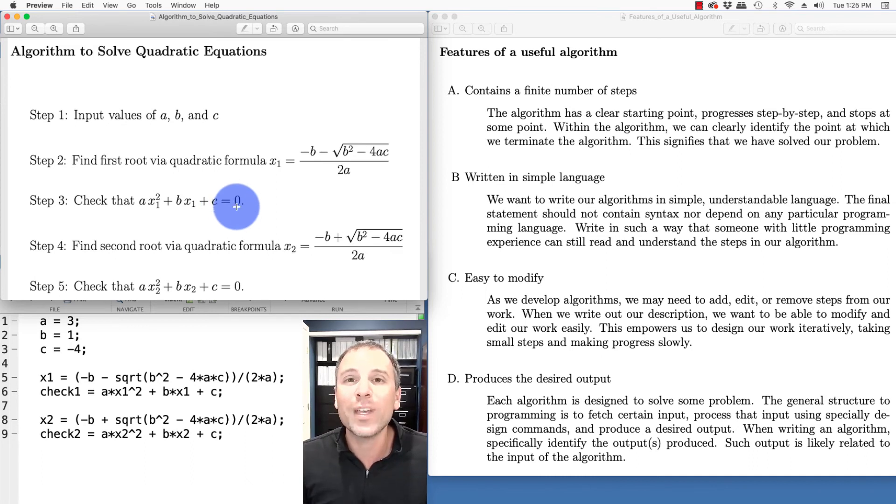When we're writing our algorithms, we clearly want to identify where that output is produced, and how the code that we've written relates to that output. In the case of a quadratic equation, notice that in steps two and four, we have our desired outputs, where steps three and five verify that those outputs solve the original problem that we are trying to solve.